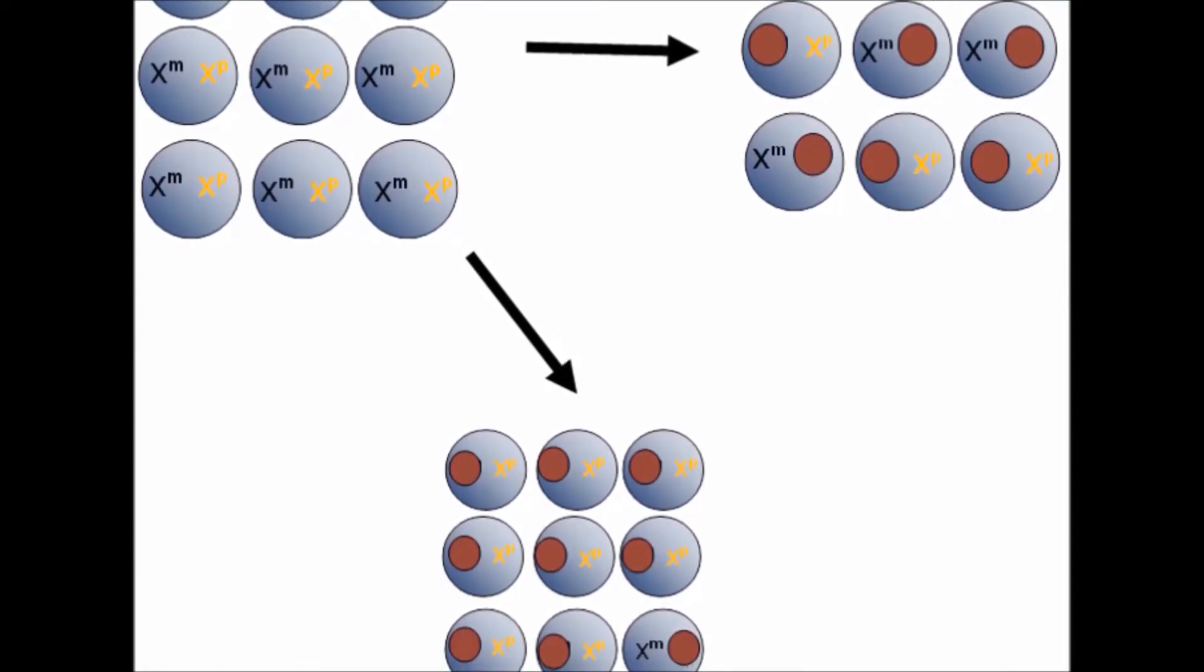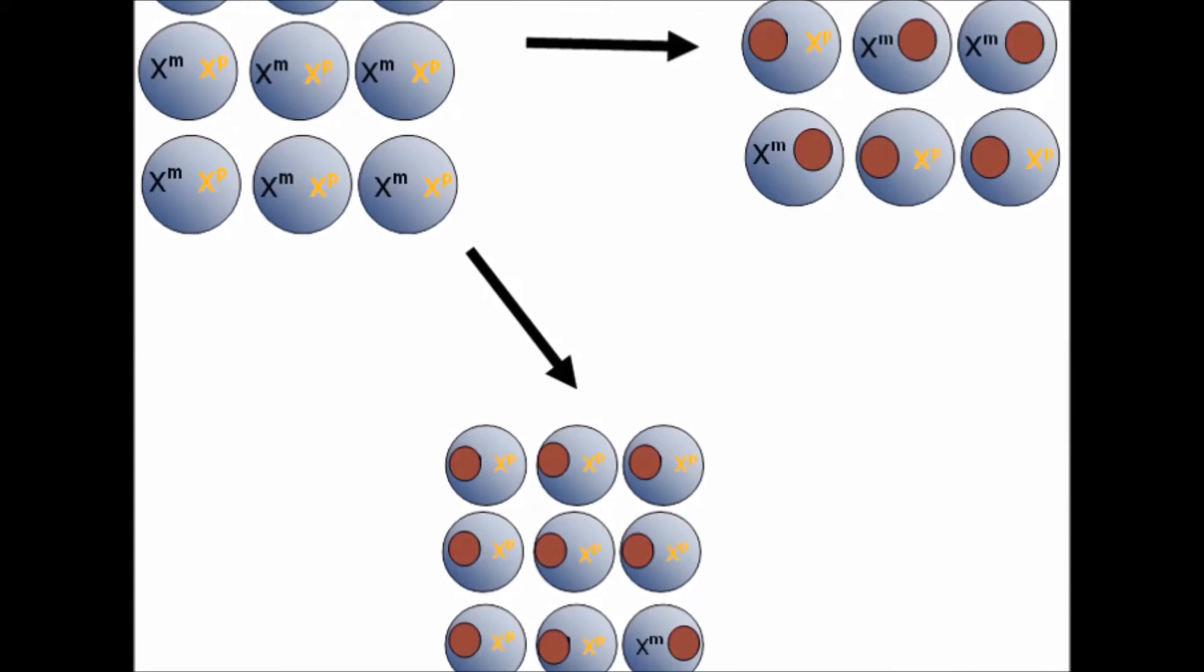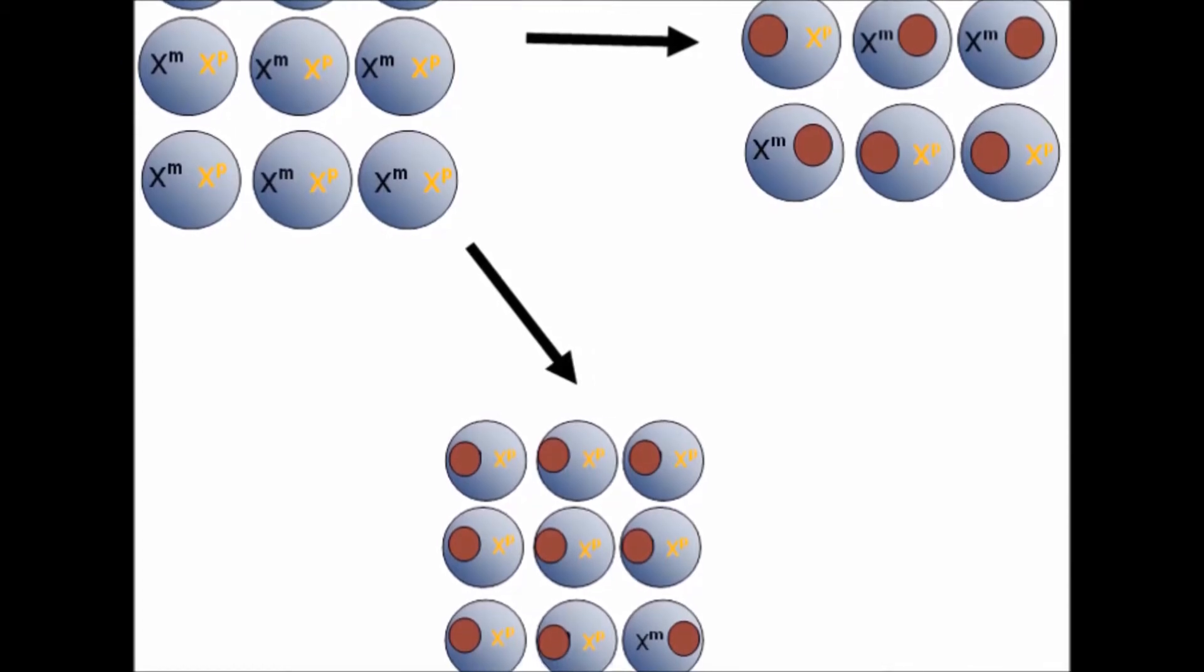Because males only have one copy of the X chromosome which is needed for proper functioning, their cells cannot afford this defect.